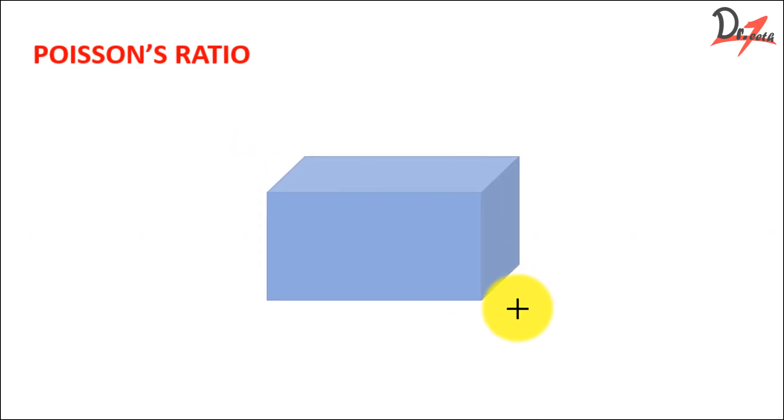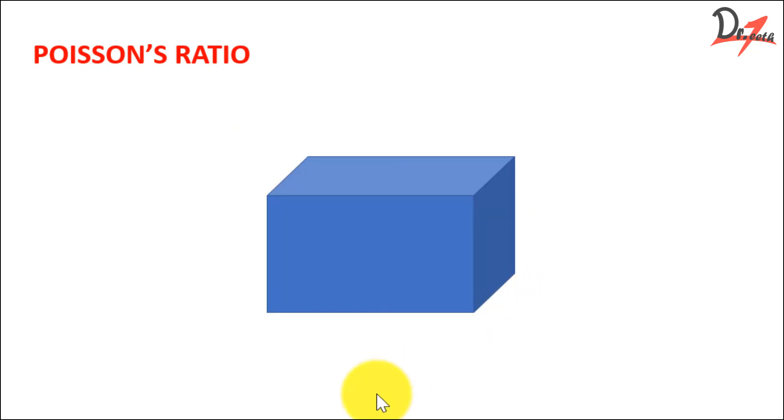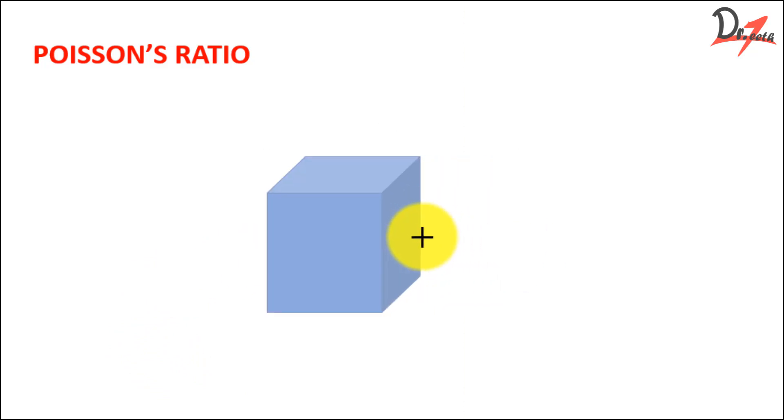Let us suppose we have an object. This is our object and we are applying force on it. Now the question is what kind of force? So either we can apply a compressive force or a tensile force - either we can compress it or we can elongate it, means either we can have tensile or compressive.